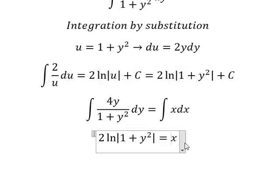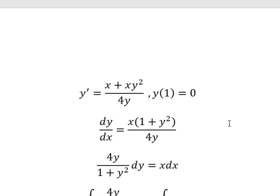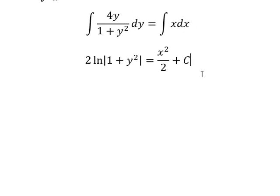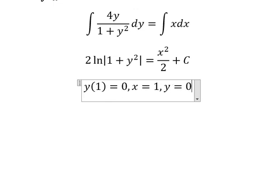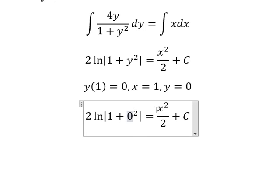We have x squared over 2, and we put c. Now we have the condition. That means when x equals 1, y equals 0. So we put 0 here and 1 here.